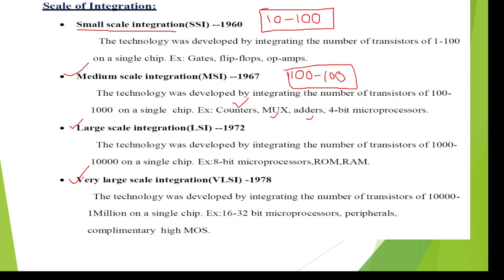Coming to LSI technology — large scale integrated circuit technology — if 1,000 to 10,000 transistors are integrated on a single chip, then it is named as large scale integrated circuit technology. Compared to MSI, it is a bigger one. Examples are 8-bit microprocessors, ROM (read-only memory), and RAM (random access memory).